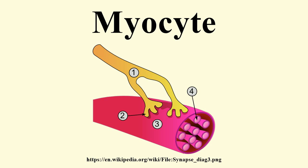The sarcolemma is the cell membrane of a striated muscle fiber and is designed to receive and conduct stimuli. At the end of each muscle fiber, the outer layer of the sarcolemma combines with tendon fibers. Within the muscle fiber, pressed against the sarcolemma, are multiple flattened nuclei. This multinuclear condition results from multiple myoblasts fusing to produce each muscle fiber, where each myoblast contributes one nucleus.